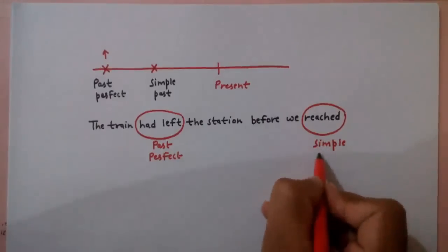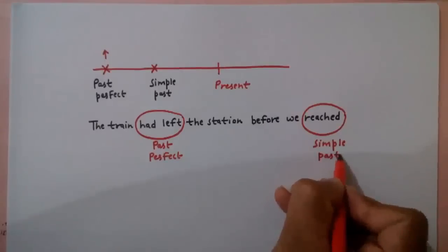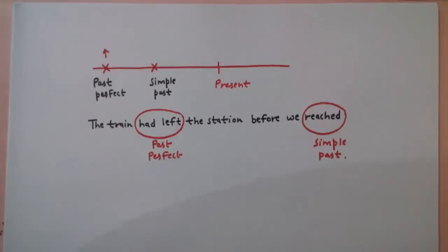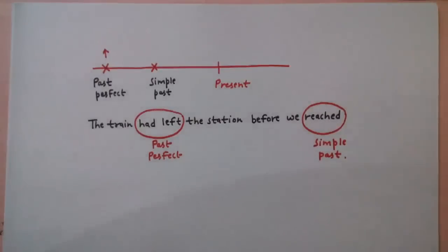Rule तो समझ में आ गया है Past Perfect का. Past Perfect में आप लोगों के past पे दो events हो रहे होते हैं. जो पहला event होता है वो आप लोगों का Past Perfect पे होता है, और जो दूसरा event होता है वो Simple Past पे होता है. इससे related spotting error के questions भी अभी देखेंगे.